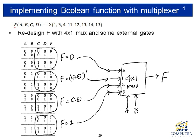We have the same four-variable Boolean function, and we construct the truth table. This time we use a four-by-one multiplexer with only two selection signals. Since we apply only two variables to the selection signal, we group the truth table by four. The first four rows have A and B as zero-zero, so input zero is directly connected to F. The expected function for those rows is zero-one-zero-one, which is the same as D. So we connect D directly to input zero.